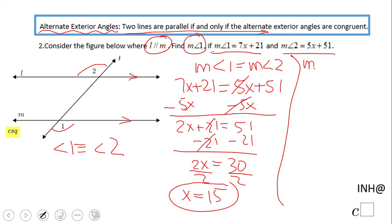which is find the measure of angle 1, which is 7x plus 21. We're gonna plug that 15 in.